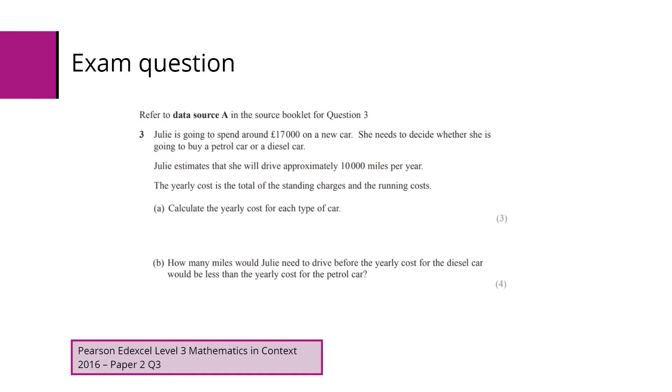So here's an exam question from 2016, paper 2, question 3. For this question students need to refer to a data source from the source booklet. Julie's going to spend around £70,000 on a new car. She needs to decide whether she's going to buy a petrol car or a diesel car. She estimates she's going to drive approximately 10,000 miles each year. The yearly cost is the total of the standing charges and the running costs. The students need to calculate the yearly cost for each type of car.